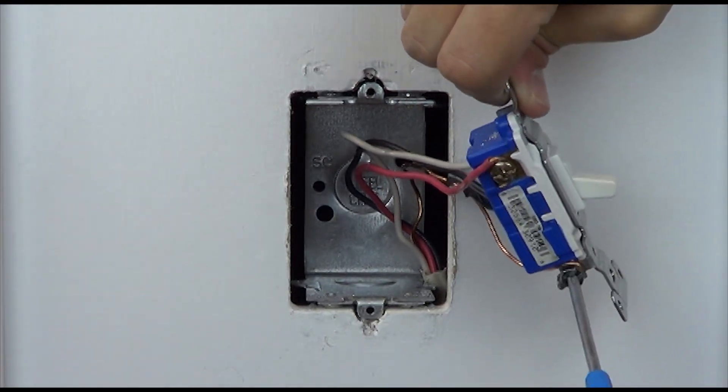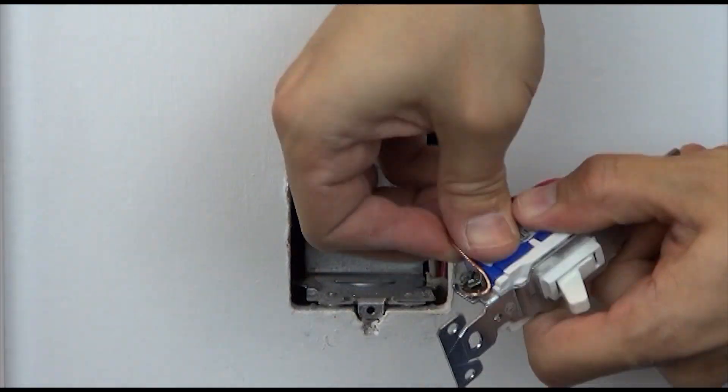Take the ground wire off the existing switch and connect it to the green wire on the dimmer.